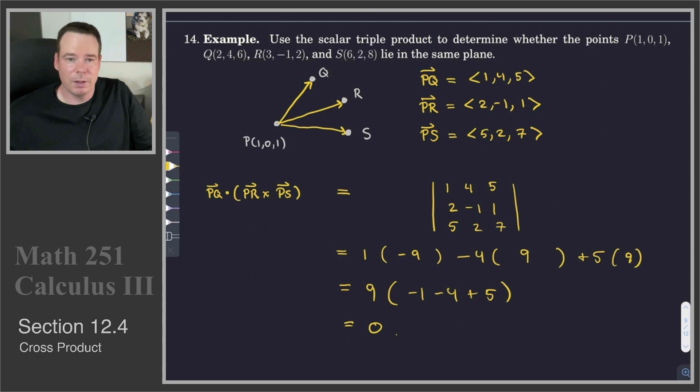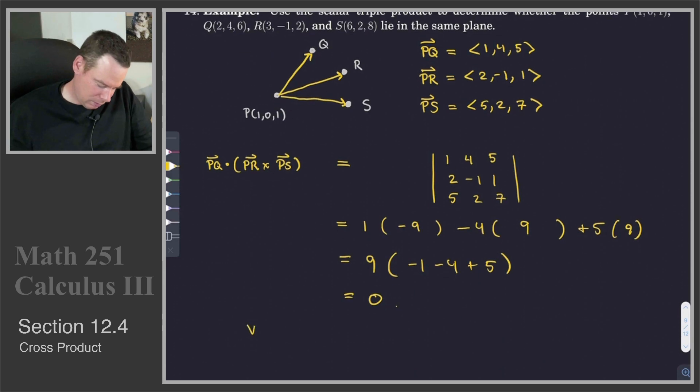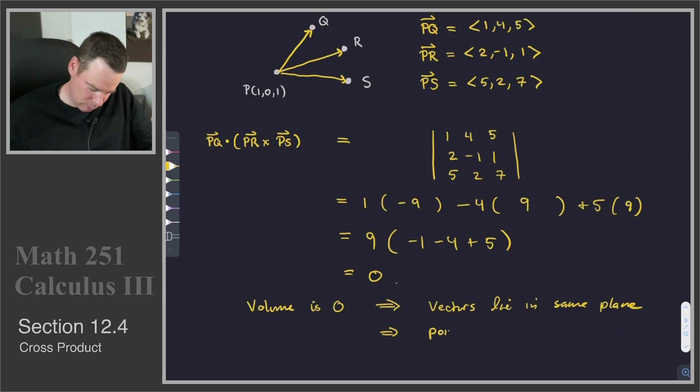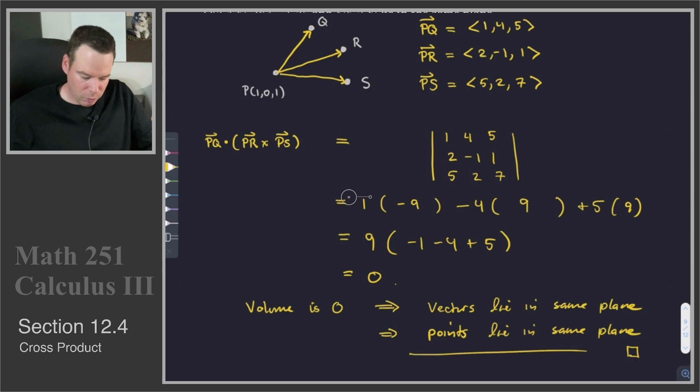What that means is that the volume of the parallelepiped is 0. So volume is 0. And so that means that the vectors lie in the same plane. And so this means that the points all lie in the same plane. So, yep, the points all live in the same plane. And we figured that out without actually having to construct a plane. What we did was we found the volume of the parallelepiped that those points would make. And that parallelepiped had 0 volume. And so the points had to all live in the same plane.